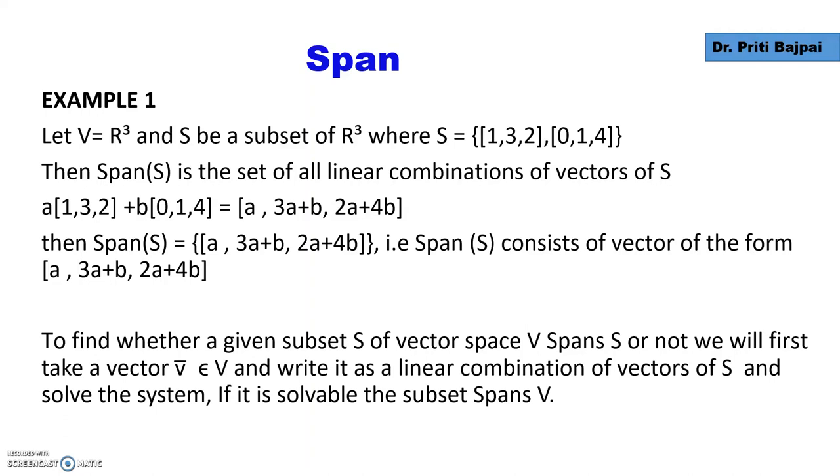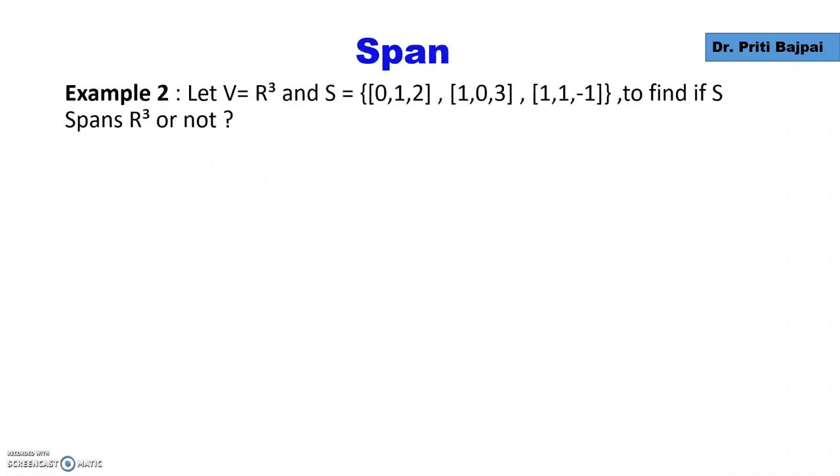To find whether a given subset S of vector space V spans our vector space or not, we will take some vector v from the vector space and write it as a linear combination of vectors of S, then try to solve the system. If it is solvable, we say the subset spans the vector space V.